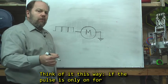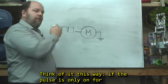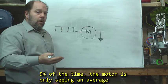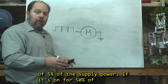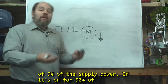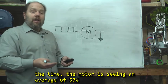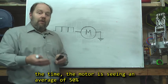Think of it this way. If the pulse is only on for 5% of the time, the motor is only seeing an average of 5% of the supply power. If it's on for 50% of the time, the motor is seeing an average of 50% of the power.